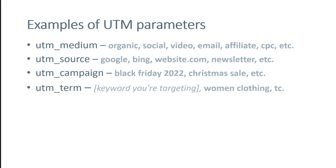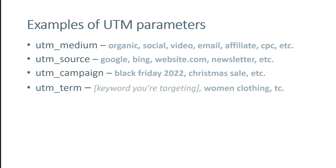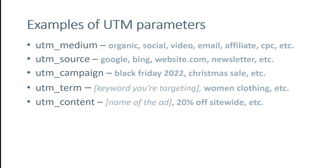Another supported UTM parameter is UTM term, where you can enter the keyword you're targeting — for example, 'women clothing'. If you're testing different text for your ads, then UTM content can also be useful. For example, one ad might say you're offering a 20% discount on all products, and another might say 'get free shipping', and then you can see which ads perform better in your marketing.